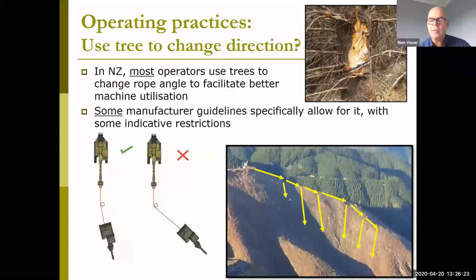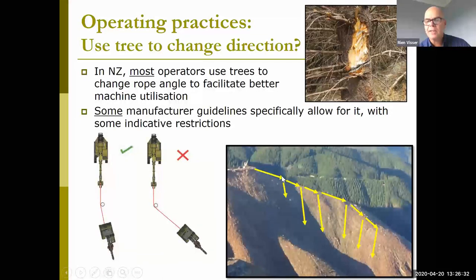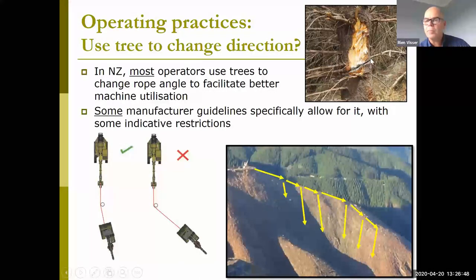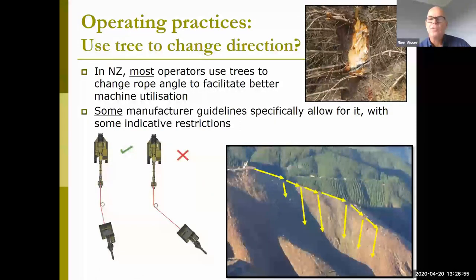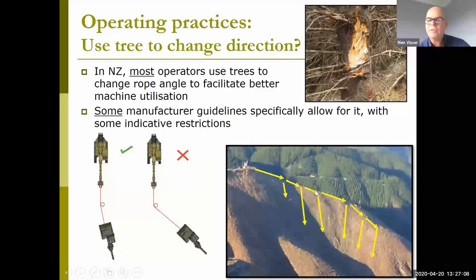Many operators use trees to change the angle of the rope to improve utilization — for example, a winch assist machine sitting at top, with a feller buncher coming down the ridgeline and using a rub tree to come down the slope, fell trees, and move back up. You can see the rope has cut into that tree. The biggest risk is the rub tree toppling back over, but if it falls into the stand during a fully mechanized operation, there is no risk to anybody.